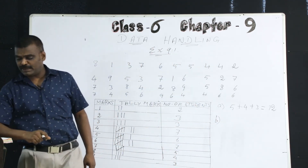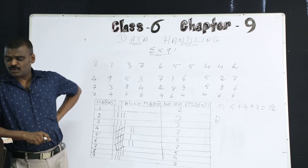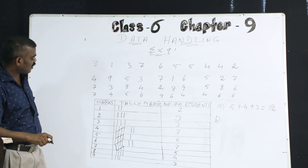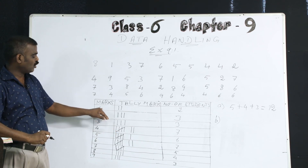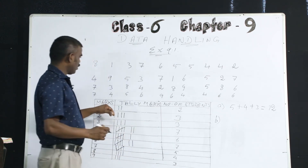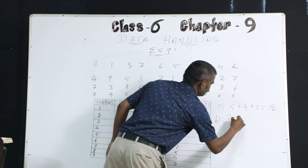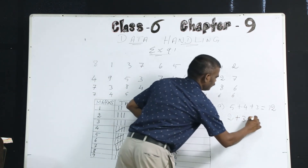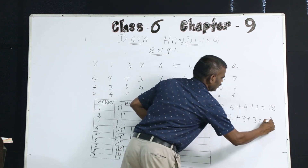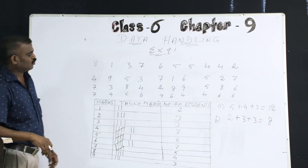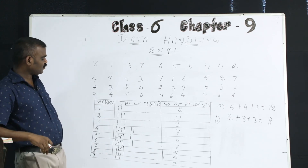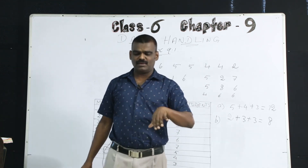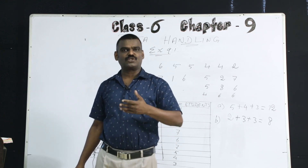Question B: how many students obtained marks below 4? Below 4 means 4 is not included — up to marks 1, 2, and 3 only. 1 mark: 2 students. 2 marks: 3 students. 3 marks: 3 students. So 3 plus 3 is 6, plus 2 is 8 students got marks below 4. This completes the first question. We will go to the next questions in the next period. See you.